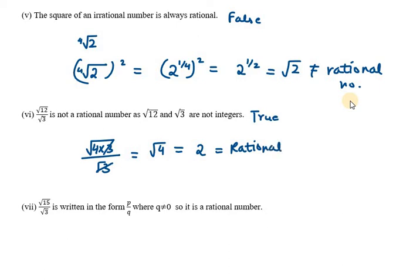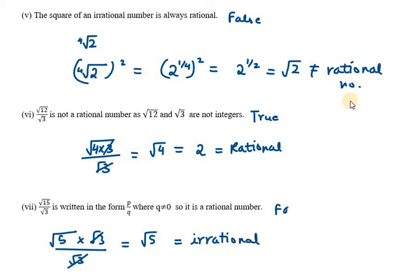Moving on to the seventh part — the last part of question 3. It says under root 15 over under root 3, written in the form of P over Q where Q is not equal to 0, is a rational number. Let's check: we write under root 15 as under root 5 times under root 3, over under root 3. The under root 3 cancels, leaving under root 5, which is an irrational number. So this is false.